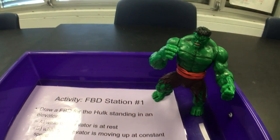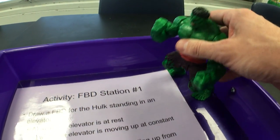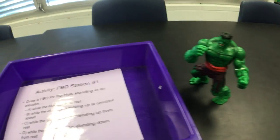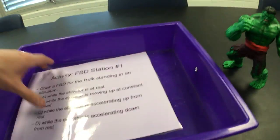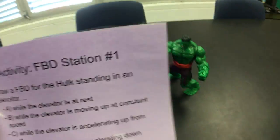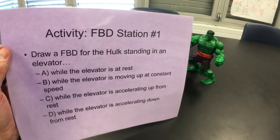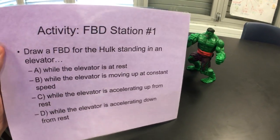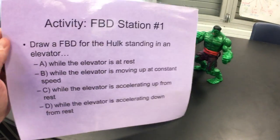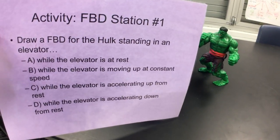The first station is with the Hulk. Imagine he is on an elevator and you've got to draw some free body diagrams for him in four situations. Number one, draw a free body diagram for Hulk standing in an elevator: A, while the elevator is at rest; B, while the elevator is moving up at constant speed.